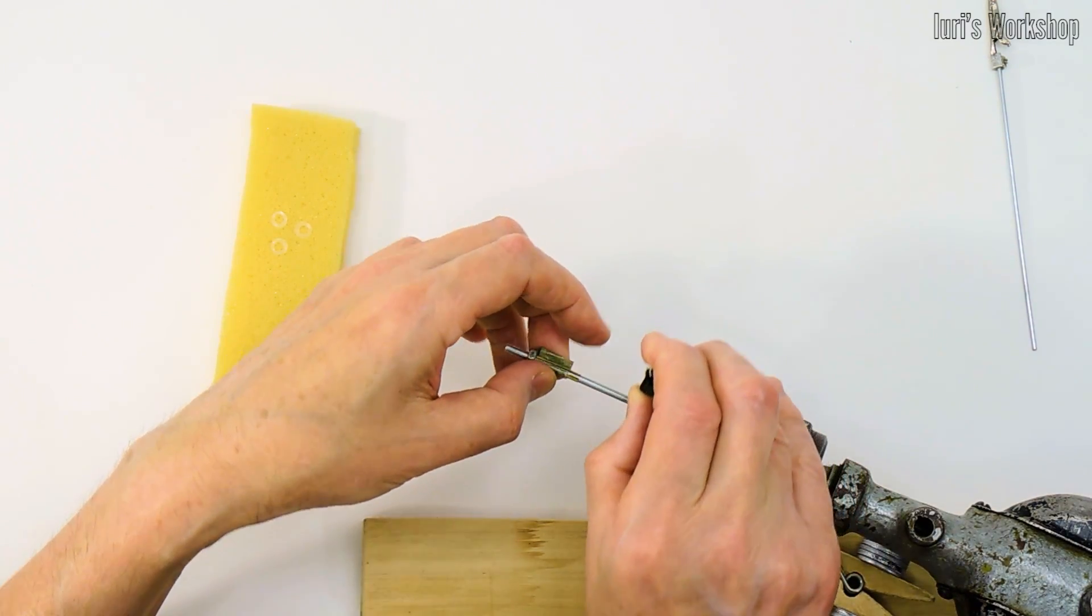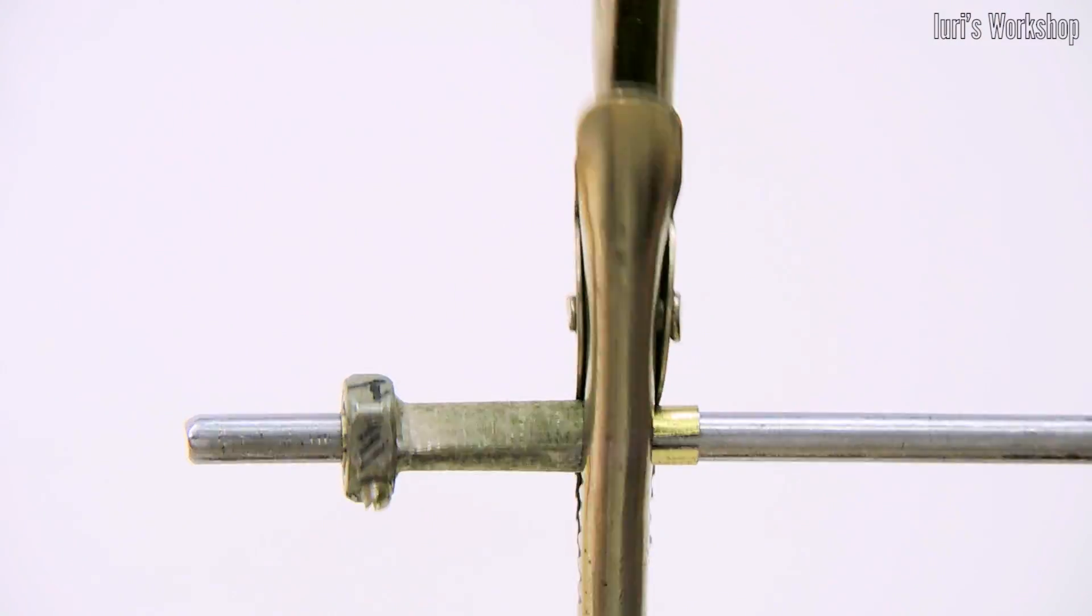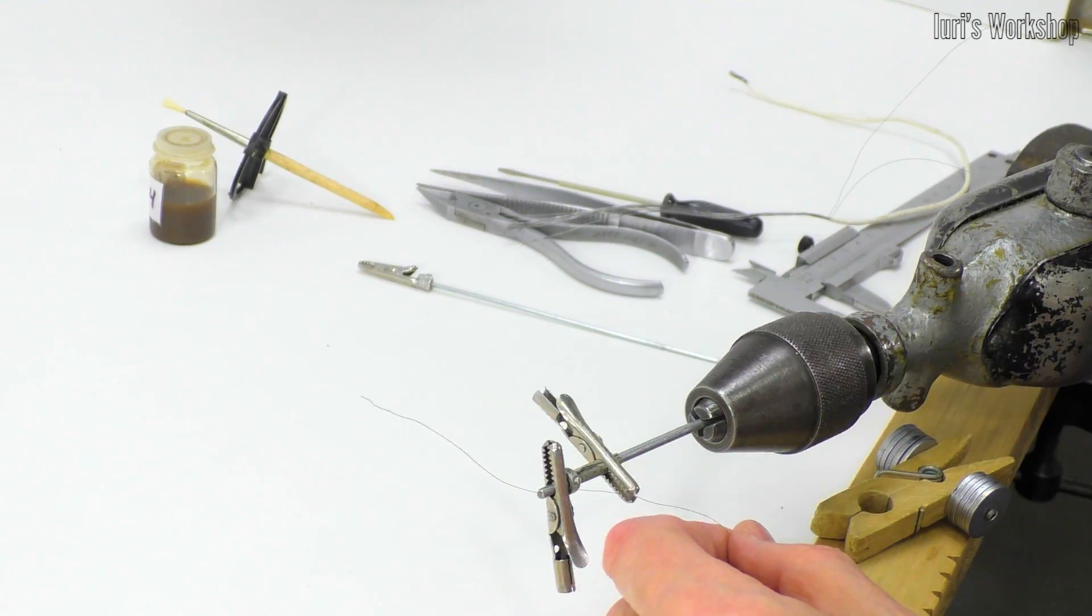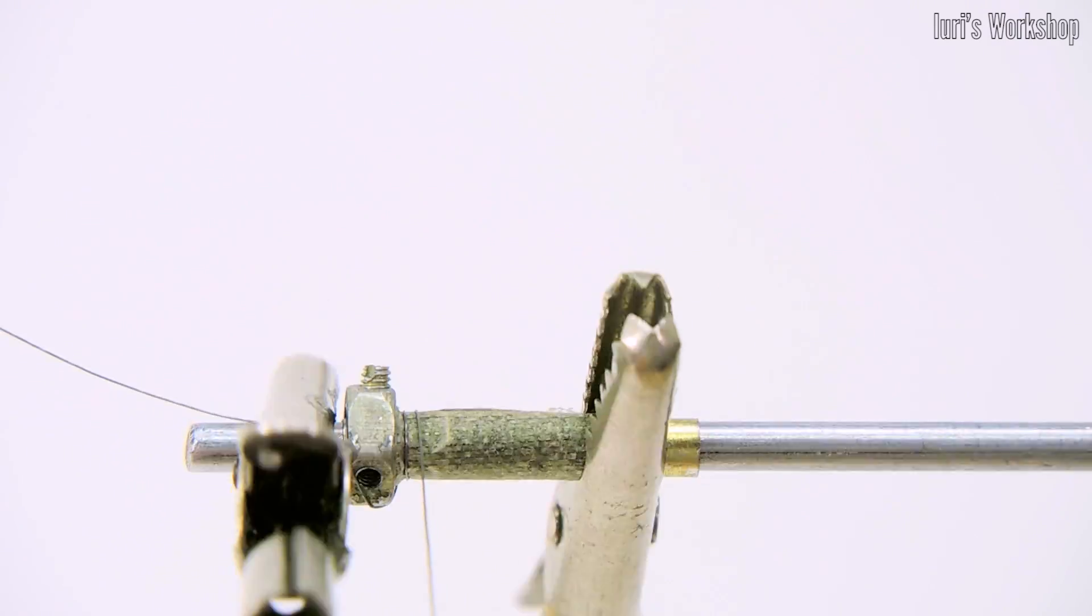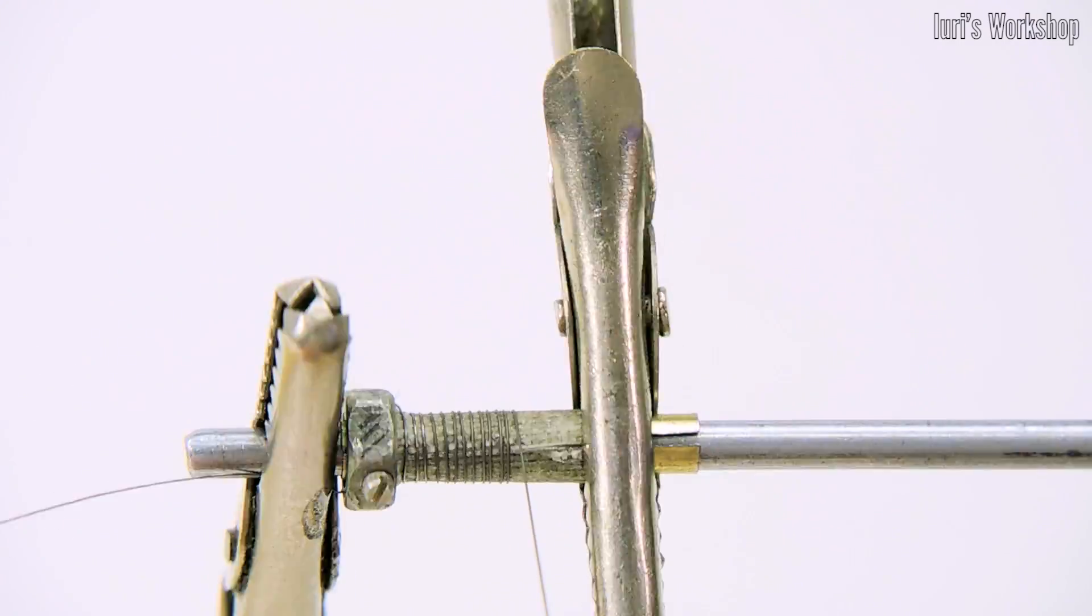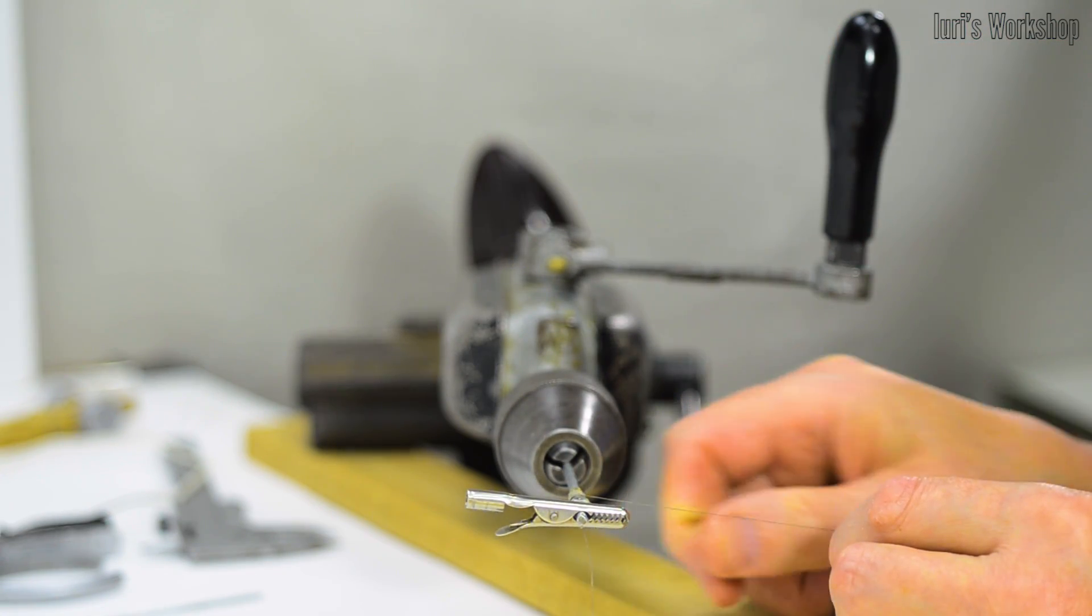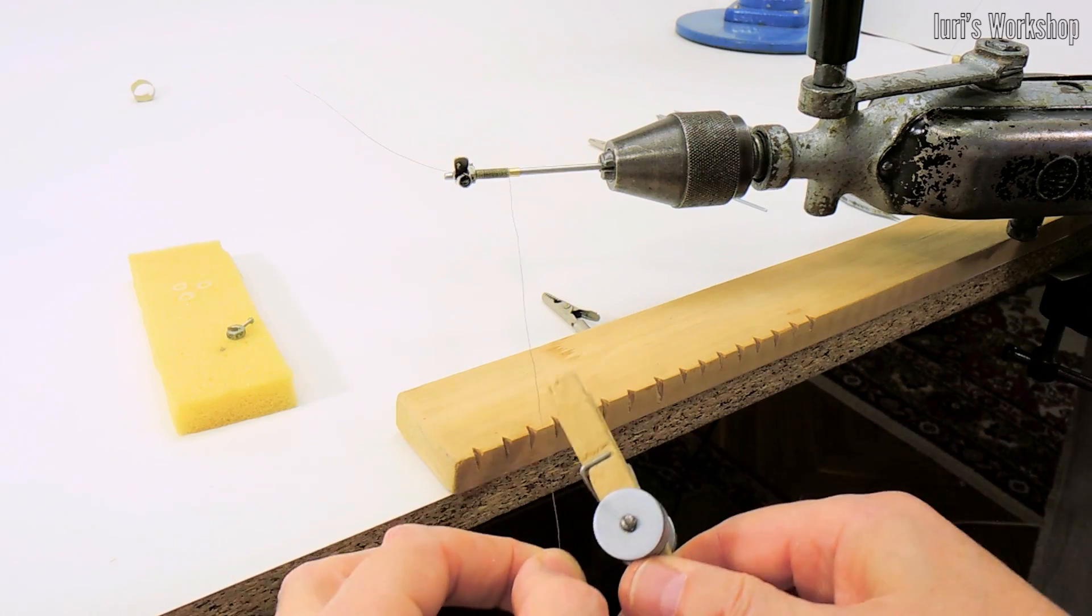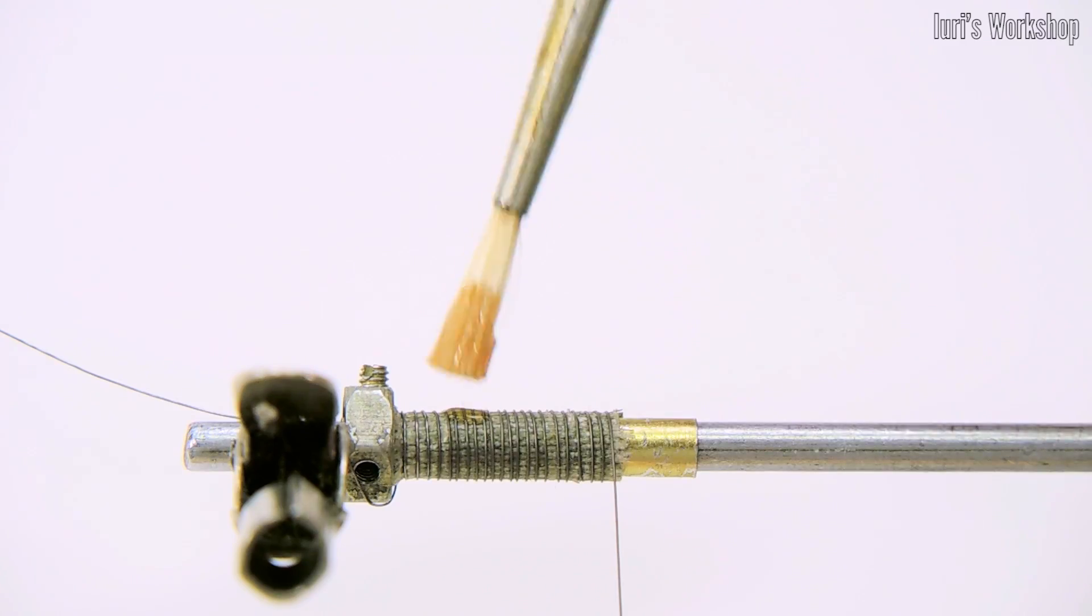For this heater, I chose a 0.2 mm nichrome wire. In this case, the resistance of the heating element was 20 ohms, and the calculated power was about 10 watts. I wound it so that there was a small gap between the turns of the spiral. It is advisable to fix the coil with some kind of glue to make it easier to continue assembly.